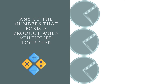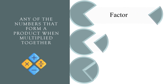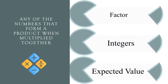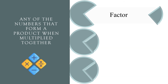Any of the numbers that form a product when multiplied together. Factor, integers, or expected value? The correct answer is factor.